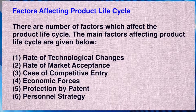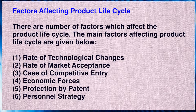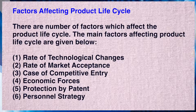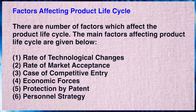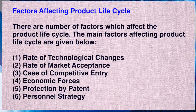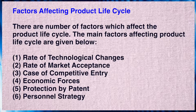Now we should know what factors influence the product life cycle. There are a number of factors which affect it. The first main factor is the rate of technological changes. Nowadays technology is changing very fast, because of which products are also becoming obsolete very fast. Earlier, the lifespan of products was longer compared to the recent stage.